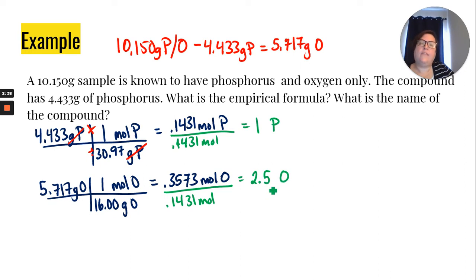Now we can't have half of an oxygen atom. So this is one of those cases that we're going to multiply both elements by two to make it a whole number ratio. And so we have to have two phosphoruses to every five oxygens. So to write the formula, we would say P2O5 as our final answer.